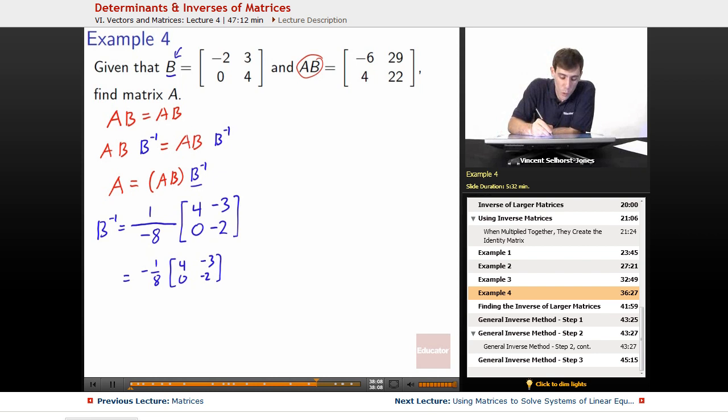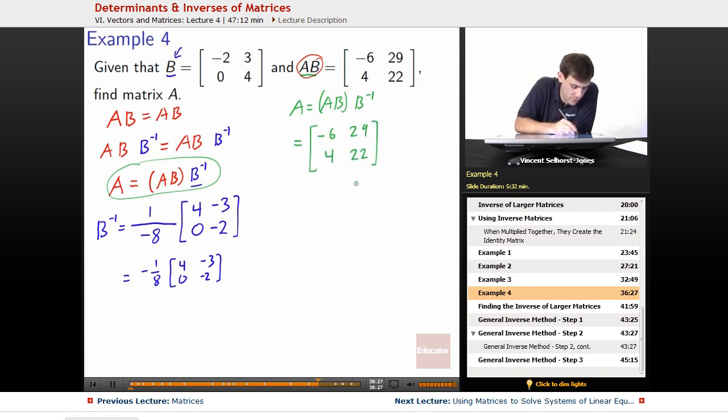So at this point, we know from what we showed here that A is equal to AB times B inverse. Well, we know AB is [-6, 29; 4, 22], and B inverse is -1/8, so times -1/8 [4, -3; 0, -2].